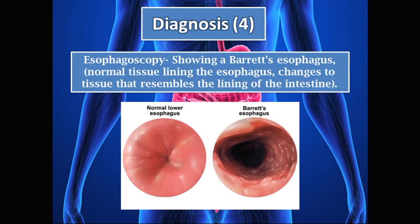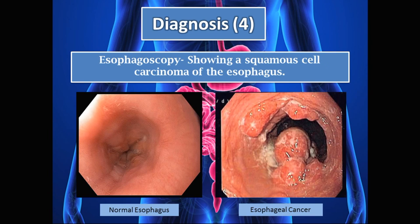Here is an example of what a gastroenterologist sees when performing an esophagoscopy. On the left is a normal esophagus, and on the right, due to chronic GERD, we can see someone who has developed Barrett's esophagus. In Barrett's esophagus, the normal tissue lining the esophagus changes to tissue that resembles the lining of the intestine. This is very important because Barrett's esophagus patients are more prone to developing esophageal carcinoma — it is a pre-cancerous state.